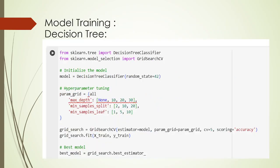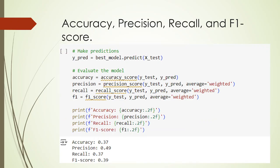Now we see the decision tree model. After applying the decision tree, we check the accuracy, precision, recall, and F1 score. The accuracy is 0.37, precision is 0.49, recall is 0.37, and F1 score is 0.39.